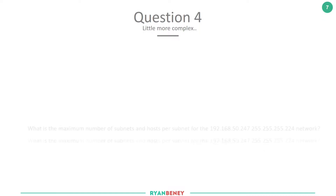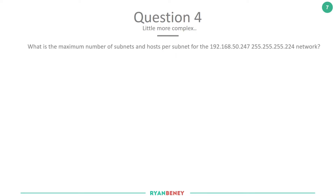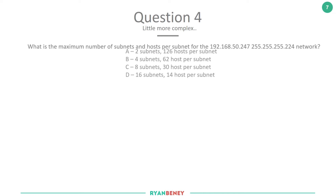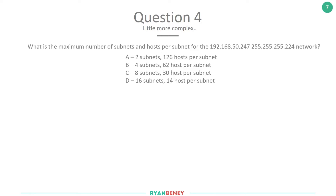Okay, so question four - I'm going to step it up a little bit now. What is the maximum number of subnets and hosts per subnet for the network 192.168.50.247 with subnet mask 255.255.224.0? The answers are: A) 2 subnets and 126 hosts, B) 4 subnets with 64 hosts, C) 8 subnets with 30 hosts, or D) 16 subnets with 14 hosts. Pause the video and when you believe you have the answer, unpause and we'll go through it together.